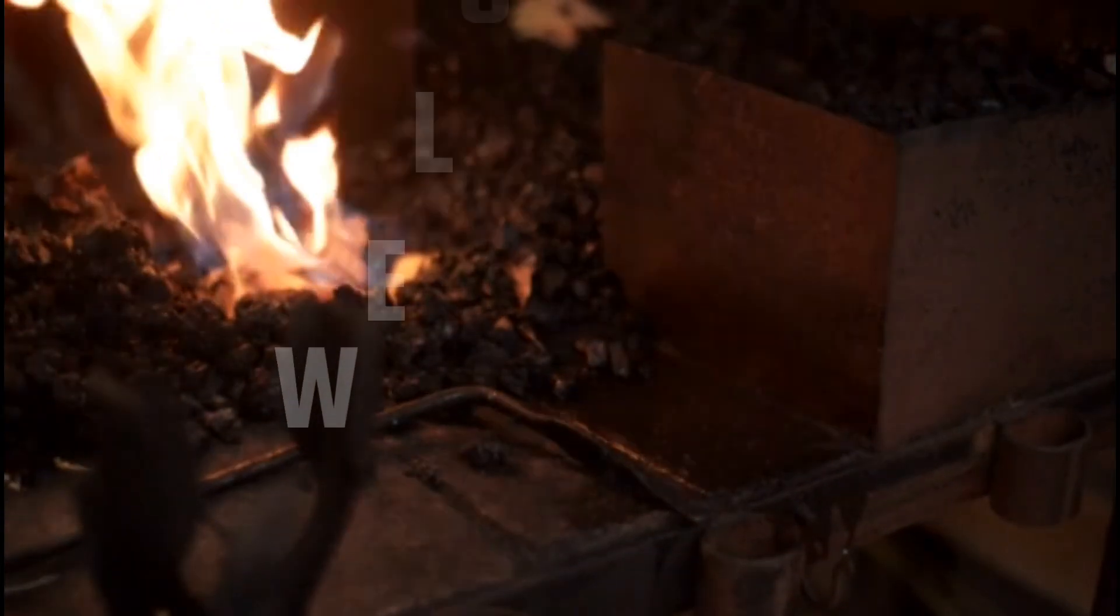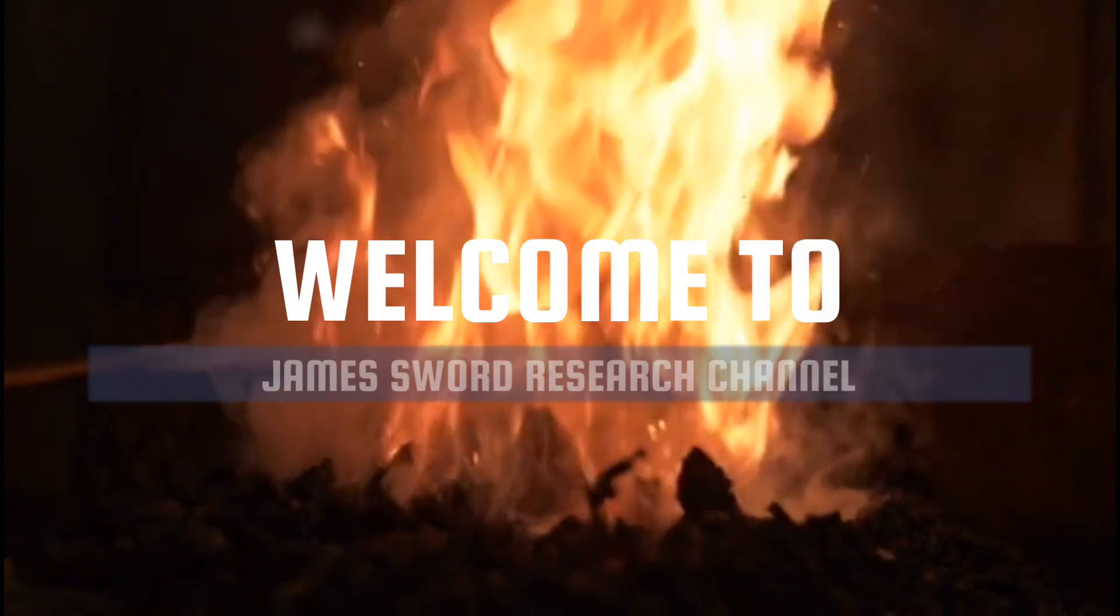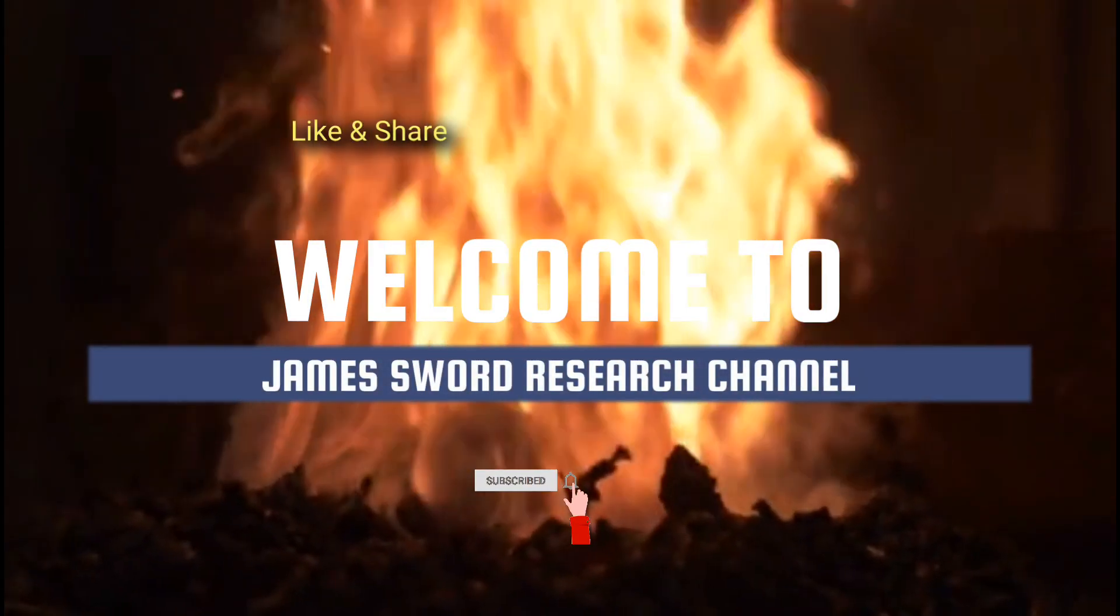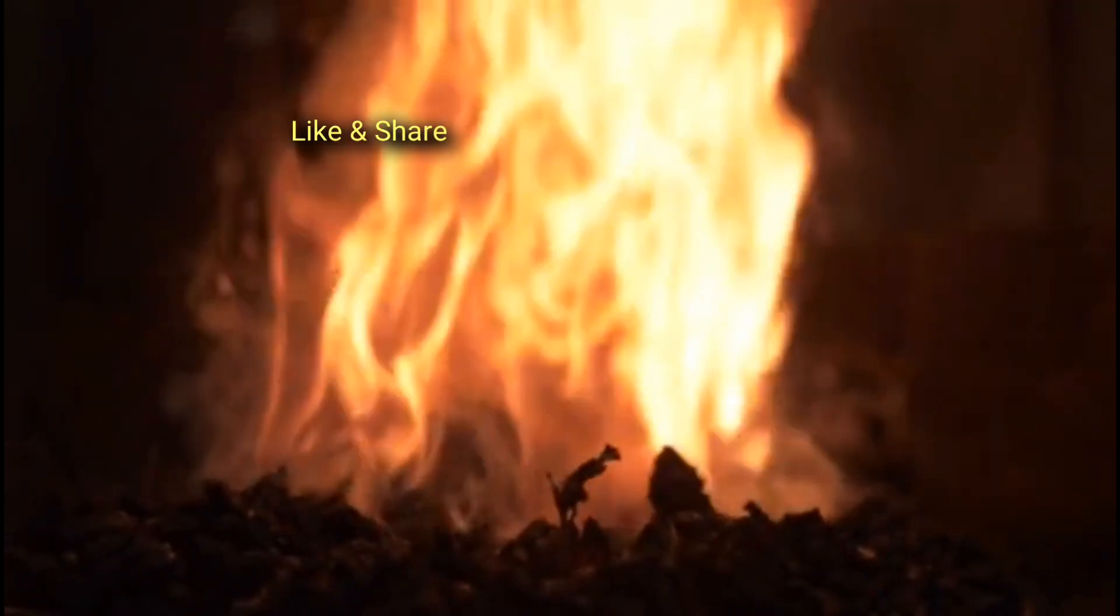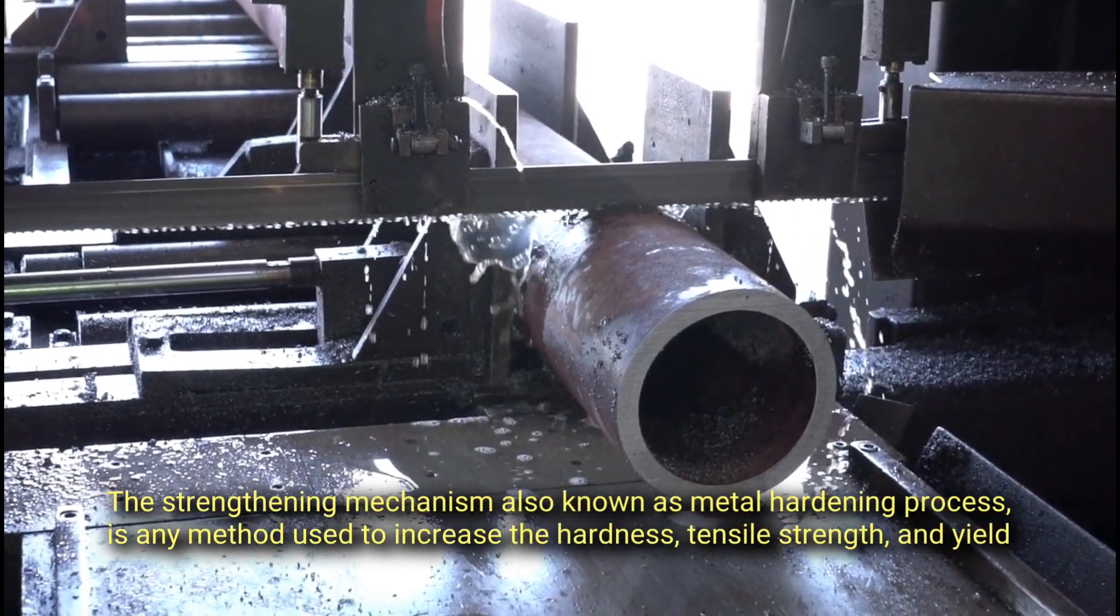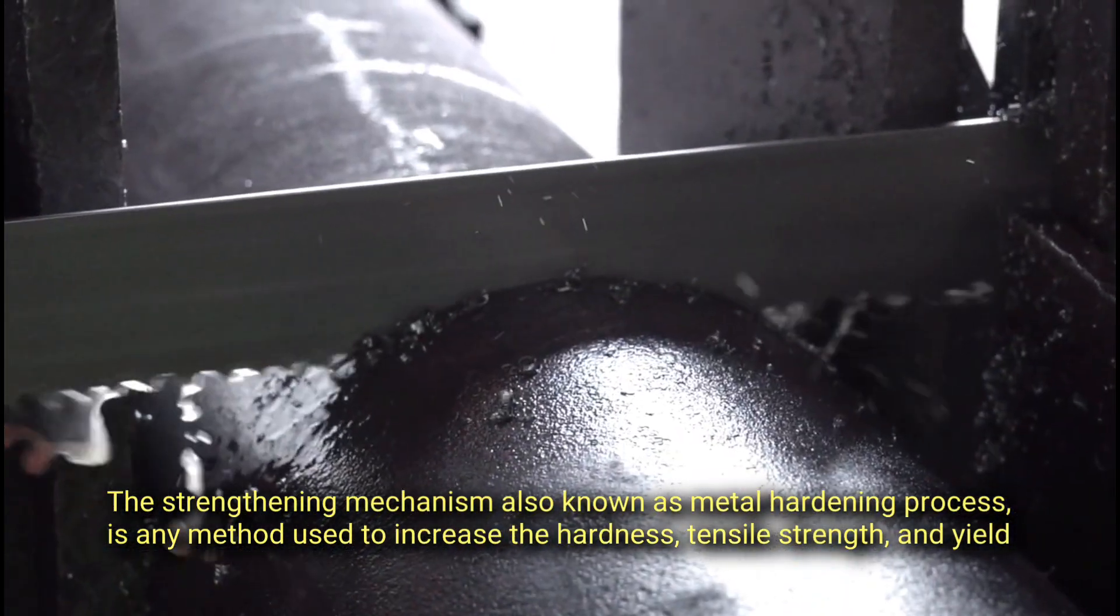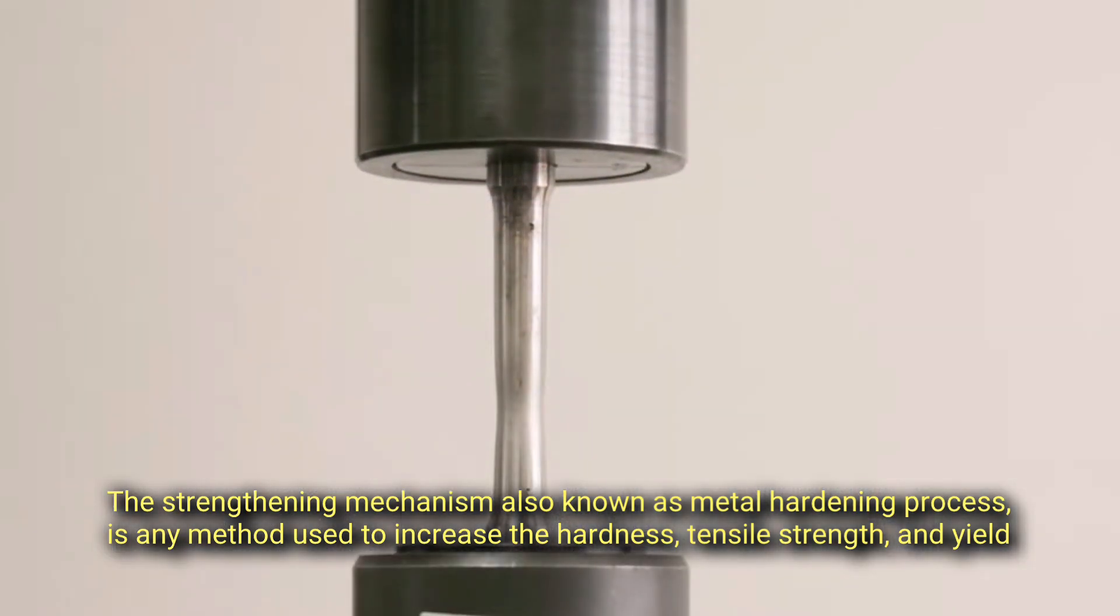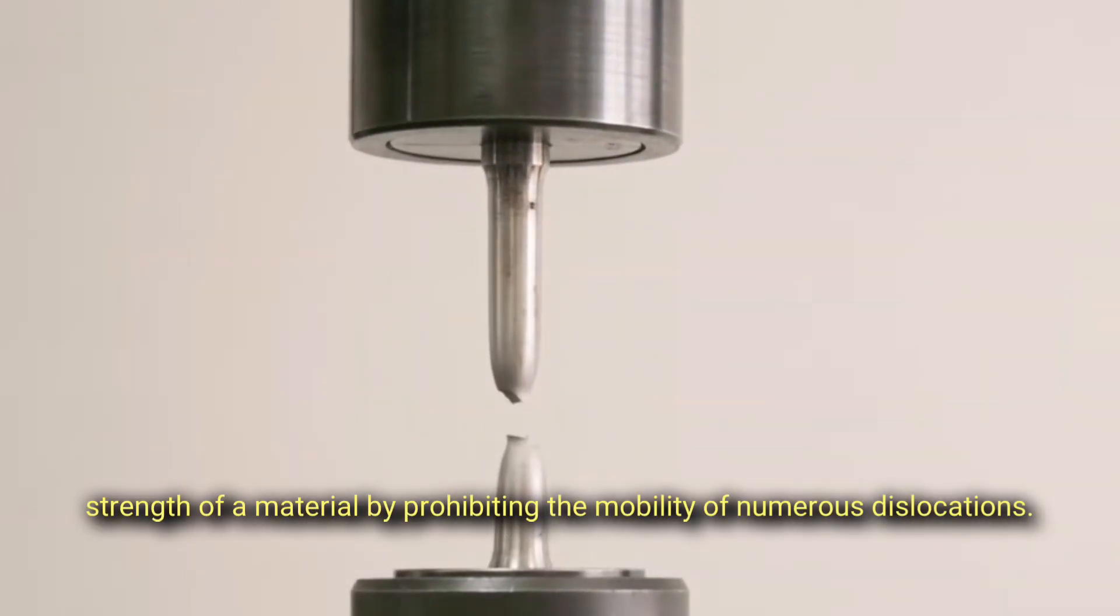These six strengthening mechanisms are discussed in this video. Welcome to James World Research Channel. If you are new to the channel, please subscribe, like and share the video, and also turn on the notification icon for more content. What is the definition of a strengthening mechanism? The strengthening mechanism, also known as the metal hardening process, is any type of method used to increase the hardness, tensile strength, and yield strength of a material by prohibiting the mobility of numerous dislocations.